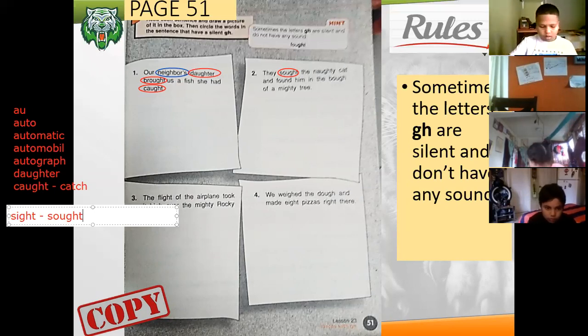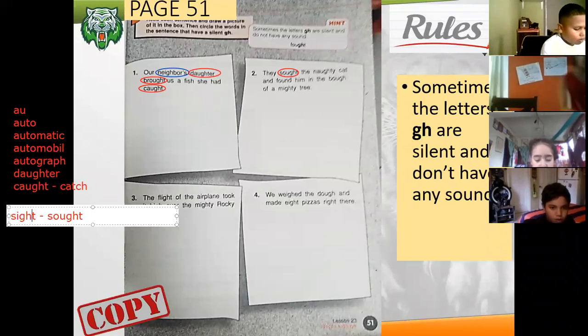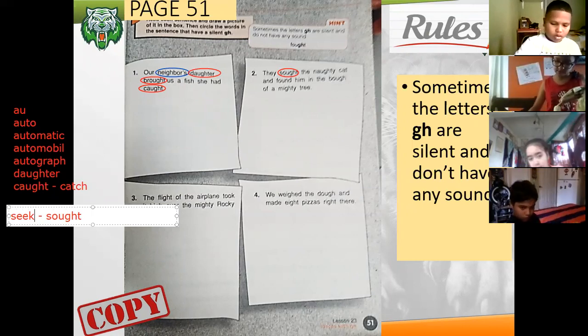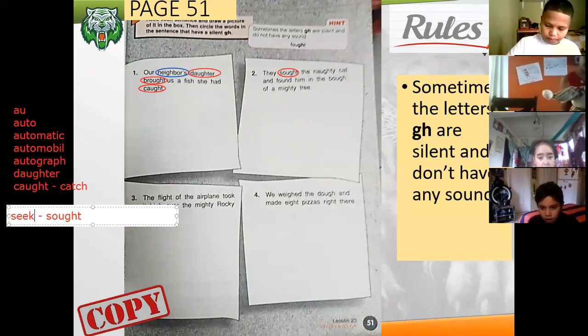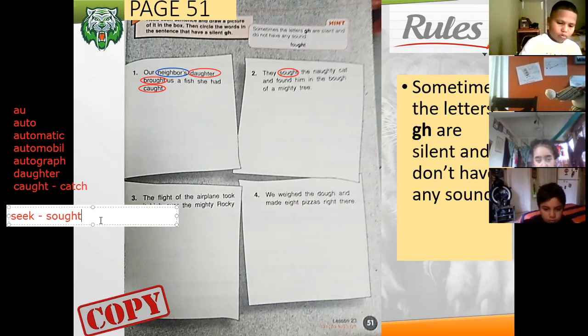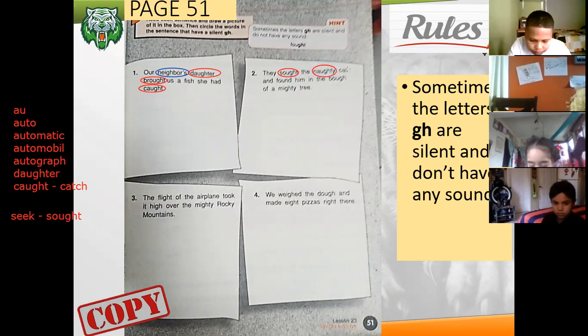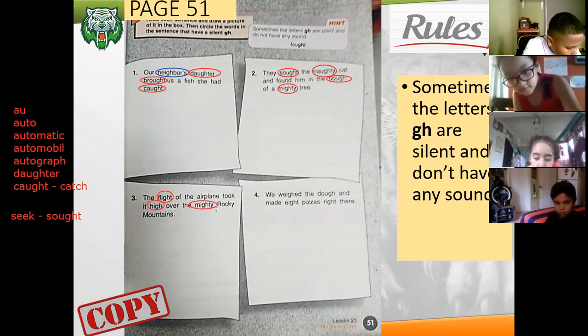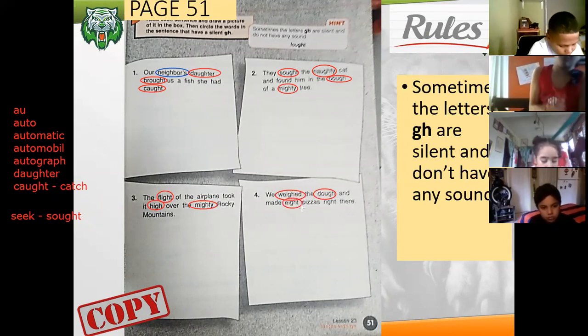No, it's the past tense of seek. Another one, salt. What else? Nasty. Now that war is fought and down in the bow of a mighty tree. This one: flight, high, mighty again. In number four: waited, dough, eight, right, and right.